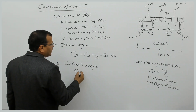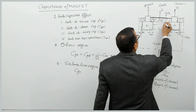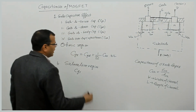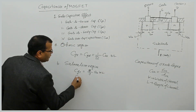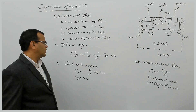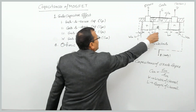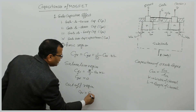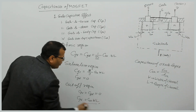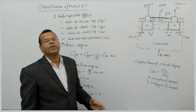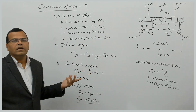For the saturation region, the channel becomes narrow towards the drain. In that case, the gate-to-source capacitance C_GS becomes 2/3 · C_ox · W · L, and C_GD becomes 0. For the cutoff region, there is no channel, so C_GS = C_GD = 0, but the gate-to-body capacitance is C_ox · W · L — simply the oxide capacitance multiplied by the area of overlap between the oxide and the channel region.